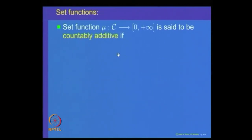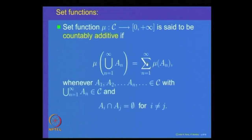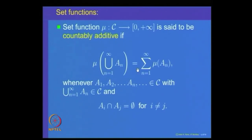We can extend this to a generalization. We will say mu is countably additive if mu of the union of Aₙ from n=1 to infinity equals the summation of mu(Aₙ), whenever A₁, A₂, A₃, ... is a sequence of sets in C such that their union is also an element of C and they are pairwise disjoint. Countable additivity is this property for a sequence of pairwise disjoint sets in C whose union is in C.